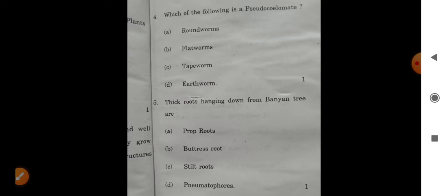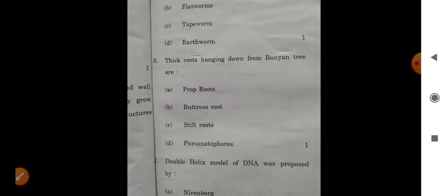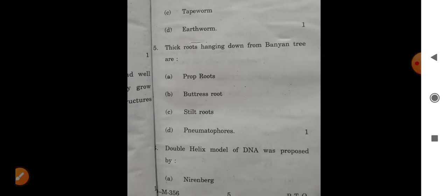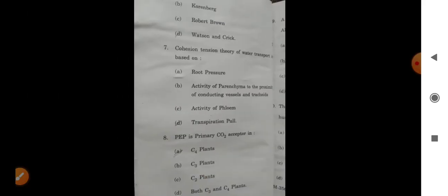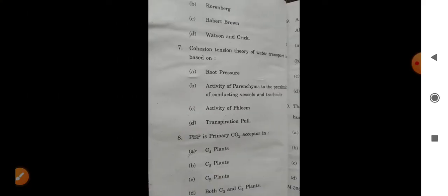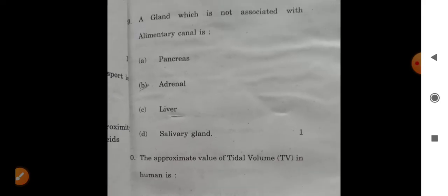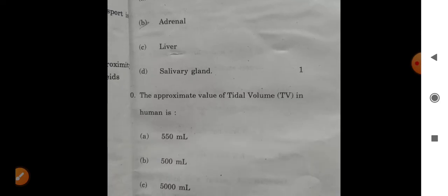Which of the following are pseudocoelomates? Prop roots hanging down from banyan. Double helix model of DNA was proposed by, and cohesion tension theory of water transport is based on. PEP is primary CO2 acceptor, and a gland which is not associated with alimentary canal is. The approximate value of tidal volume in human is.